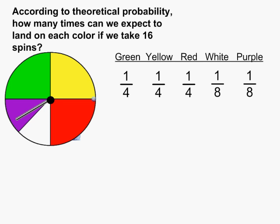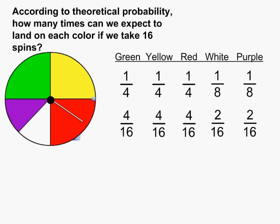All of the theoretical probabilities we just listed are expressed in lowest terms. We must convert each one of these fractions into sixteenths because we want to know how many spins out of 16. For green, yellow, and red, we convert the four into 16; and for white and purple, we convert the eight into 16. One fourth is equivalent to four sixteenths, and one eighth is equivalent to two sixteenths.